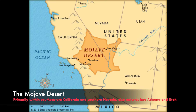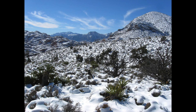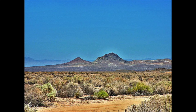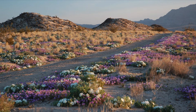The Mojave Desert is characterized largely by its winter rainy season. Hard freezes are common, but not as severe as in the Great Basin Desert. The perennial vegetation is composed mostly of low shrubs. Annuals carpet the ground in wet years.